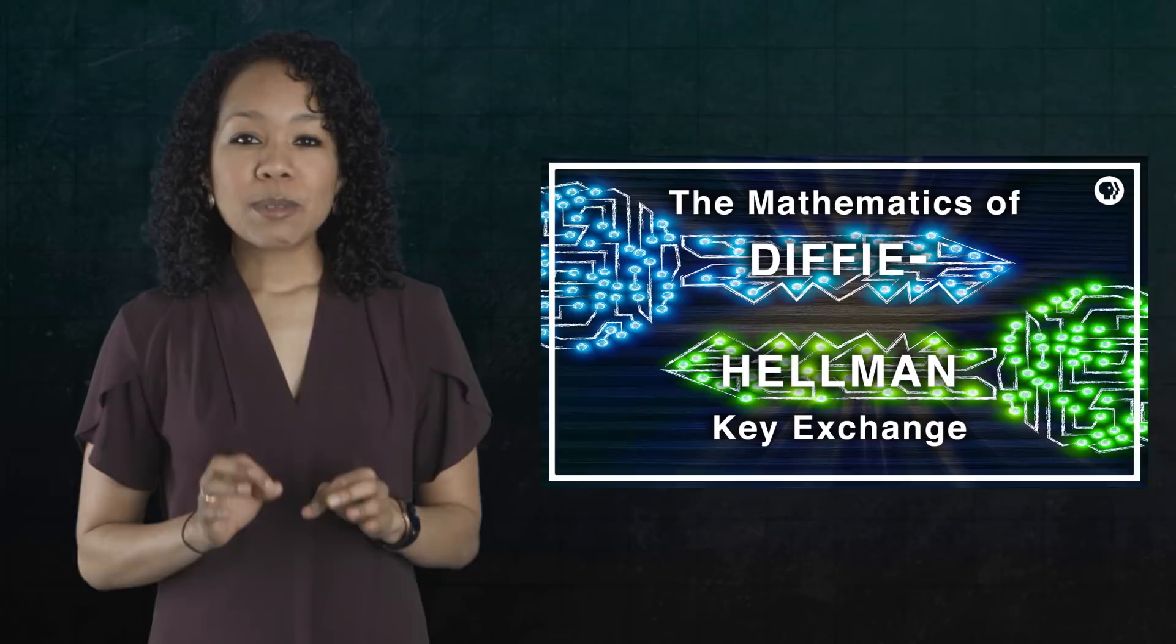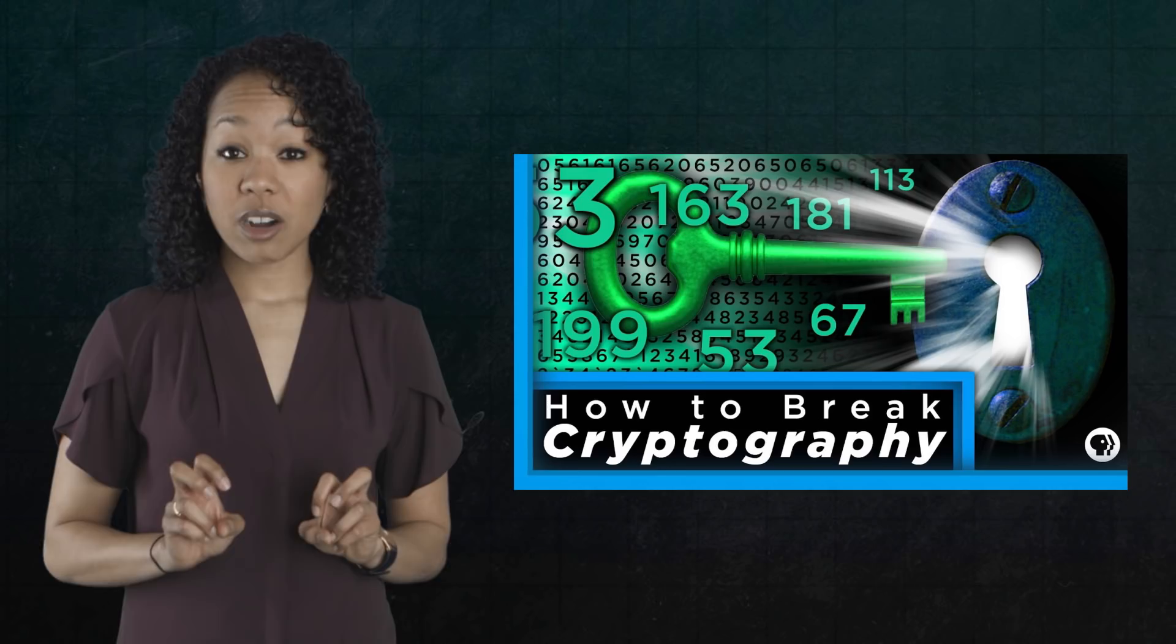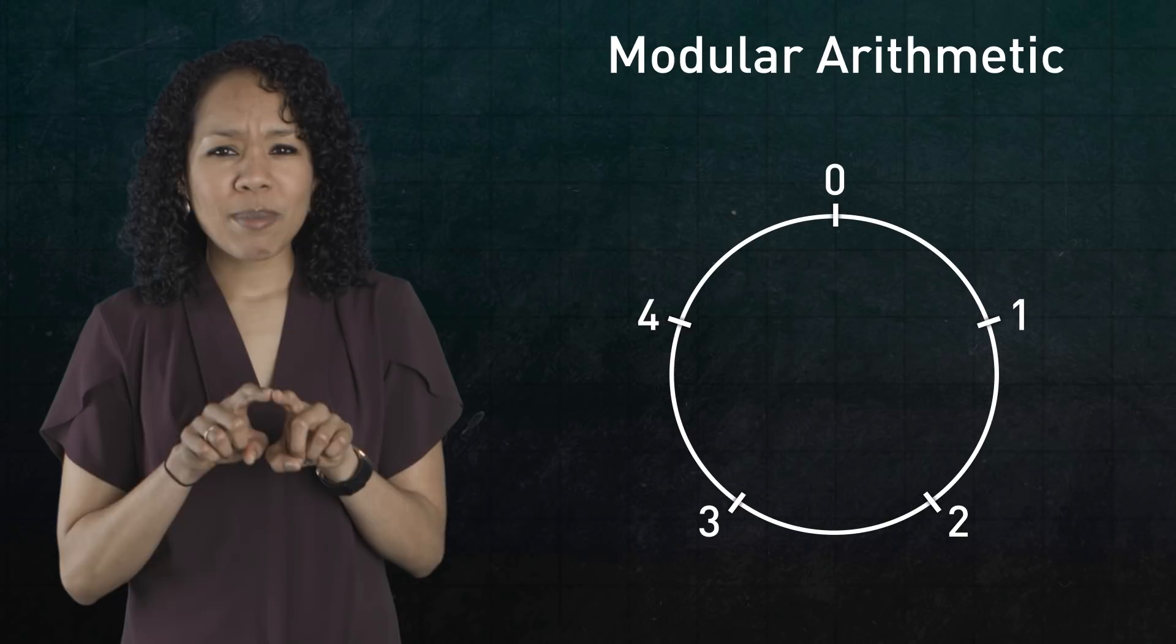In Gabe's episode on the Diffie-Hellman key exchange, he referred you to Kelsey's video How to Break Cryptography. There, she introduced modular arithmetic, which, as she described, is what happens when you count in a circle.